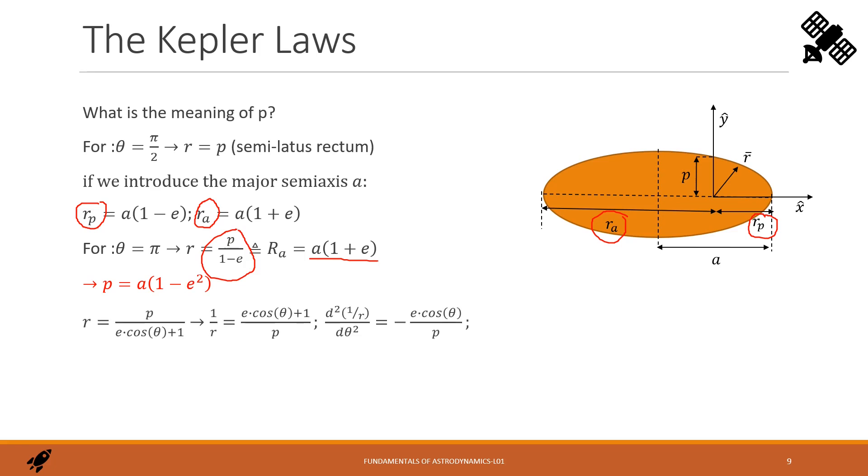Let's write now the trajectory equation we have found using p and e. If we make the inverse and then the second derivative over theta, we get this expression. And this expression we want to plug in into the fourth Binet formula for the radial acceleration. The result is this expression in red that we can compare with the value of the acceleration given by the Newton law. And that allows to write a simple relationship between h and p.